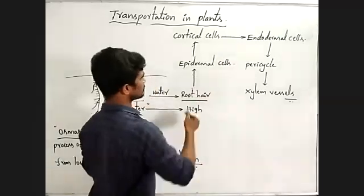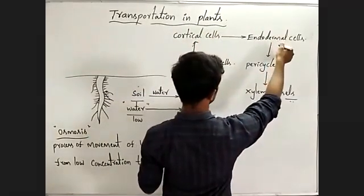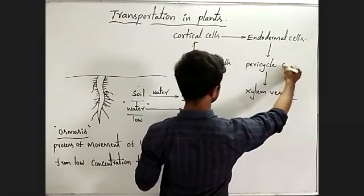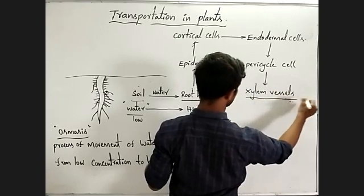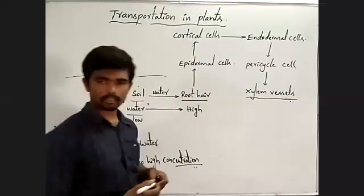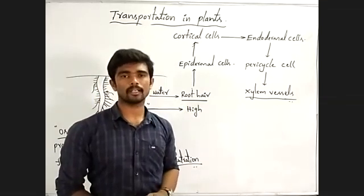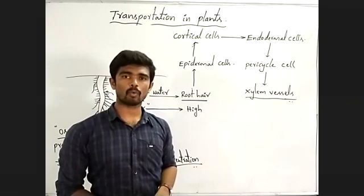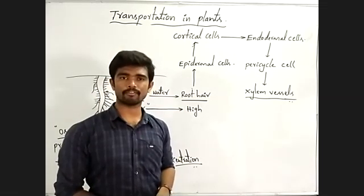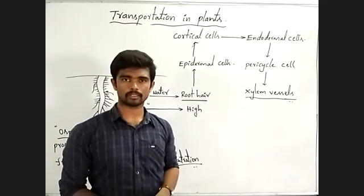From the root hair, water then enters into the epidermal cells, from there into the cortical cells, then endodermal cells, then pericycle cells, and ultimately water enters into the xylem vessels. This is just a flow chart. In the next class, we will discuss the complete mechanism of water absorption and translocation of water from the root system to all parts of the plant.